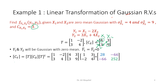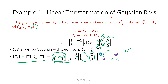We find the output covariance Cy using the equation Cy equals T times Cx times T-transpose. T-transpose means the rows become columns. You can multiply the first two matrices and then by the third, or use MATLAB or a calculator. The result gives us sigma-Y1-squared, sigma-Y2-squared, and C-Y1Y2.